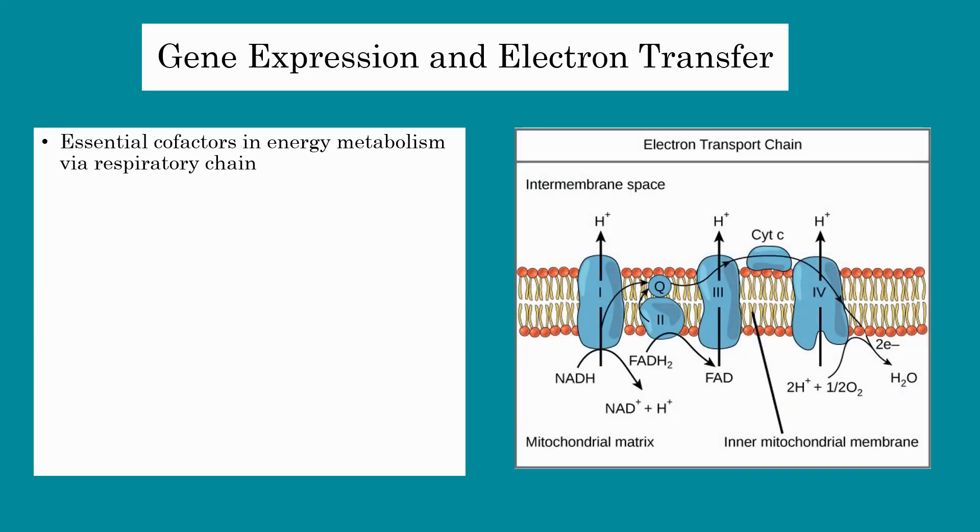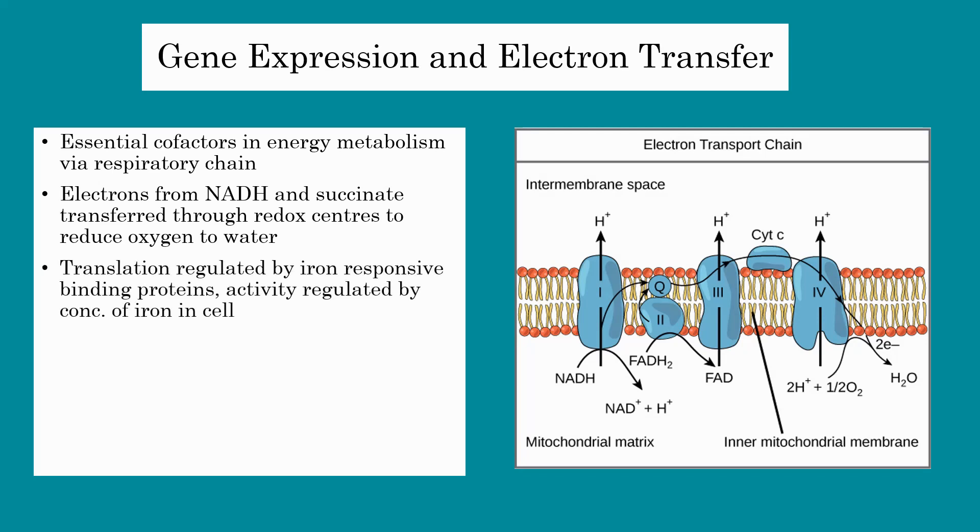Iron-sulfur clusters are essential cofactors in energy metabolism and are important in the mitochondrial respiratory chain. Electrons from the oxidation of NADH and succinate are transferred through a chain of redox centers consisting of flavins and iron-sulfur clusters to reduce oxygen to water.